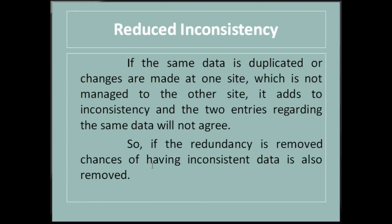Next is reduced inconsistency. When the same data is duplicated and changes are made on one side but not propagated to the other, it gives rise to inconsistency — the two entries regarding the same data will not agree with each other. At such times, the data is said to be inconsistent. So if redundancy is removed, the chances of having inconsistent data are also removed.